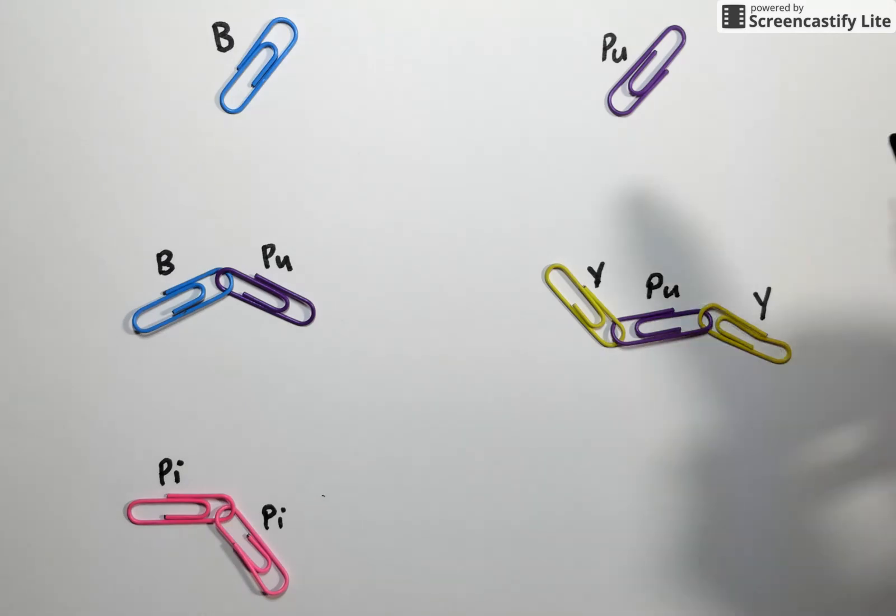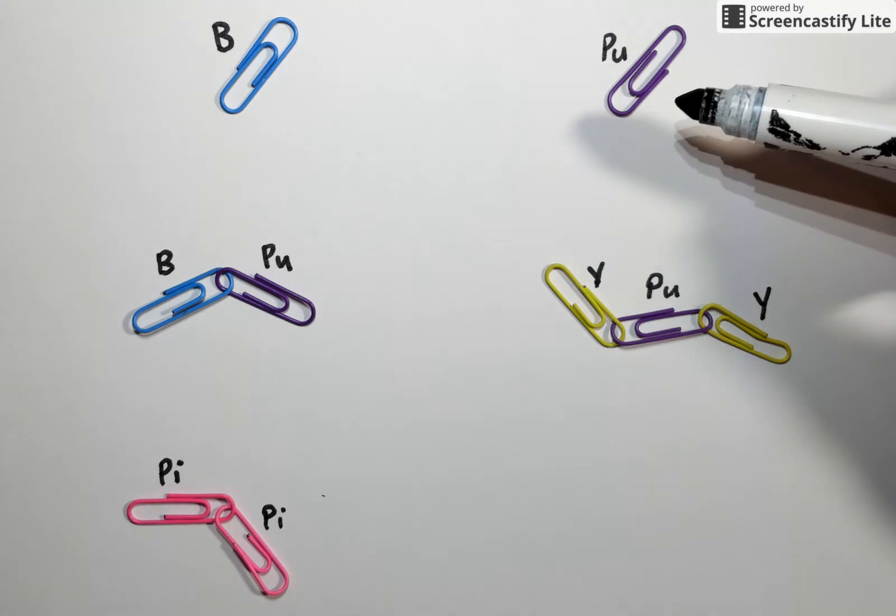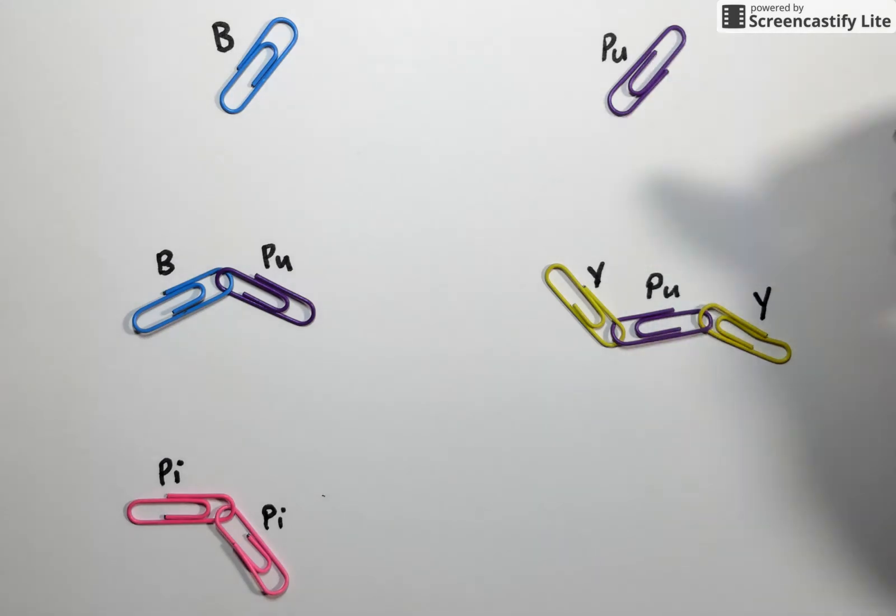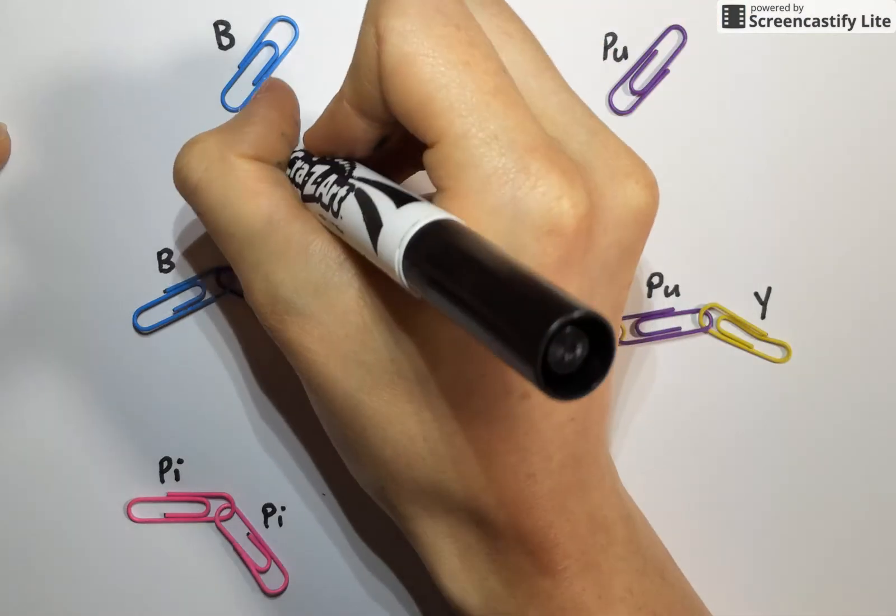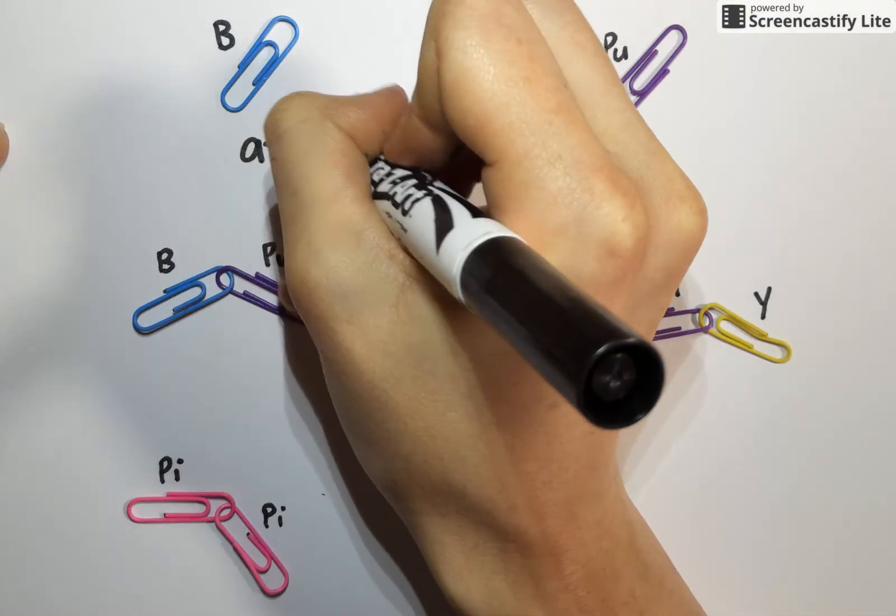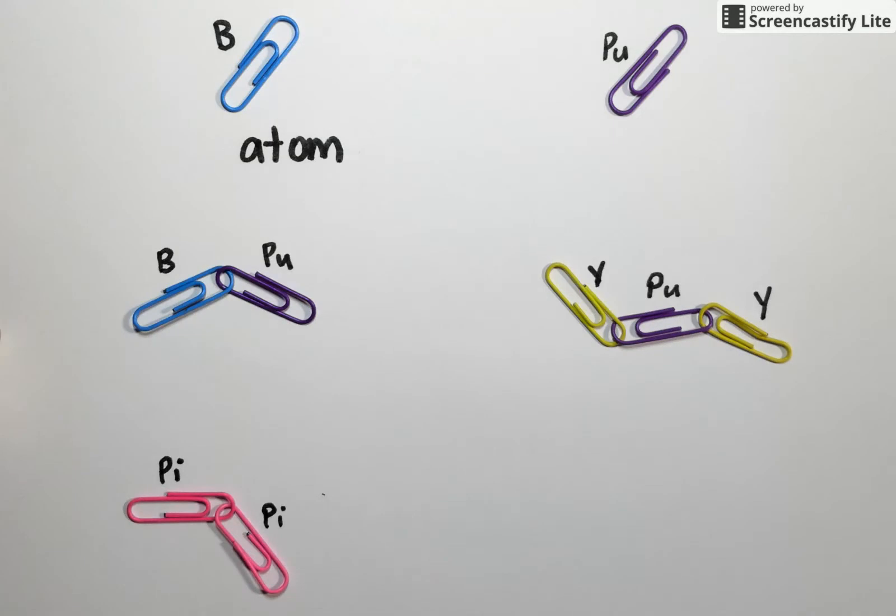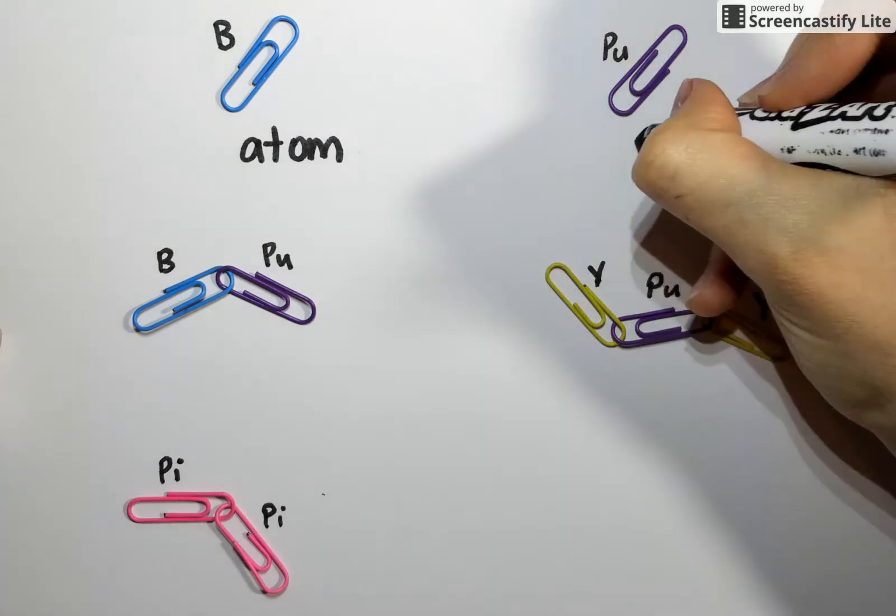Starting up at the top we see the most simple form of our paper clips. They're sitting there on their own. Each individual paper clip can be referred to as an atom. On the left we have an atom of B. On the right we have an atom of PU.